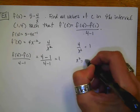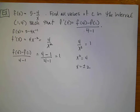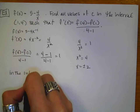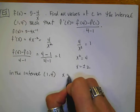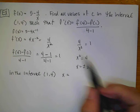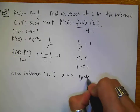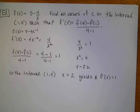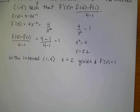Setting 4 over x squared equal to 1 and cross multiplying, I get x equals plus or minus 2. Since the interval is from 1 to 4, the negative value doesn't work. So x equals 2 yields a derivative of 1, and that answers the specific question asked.